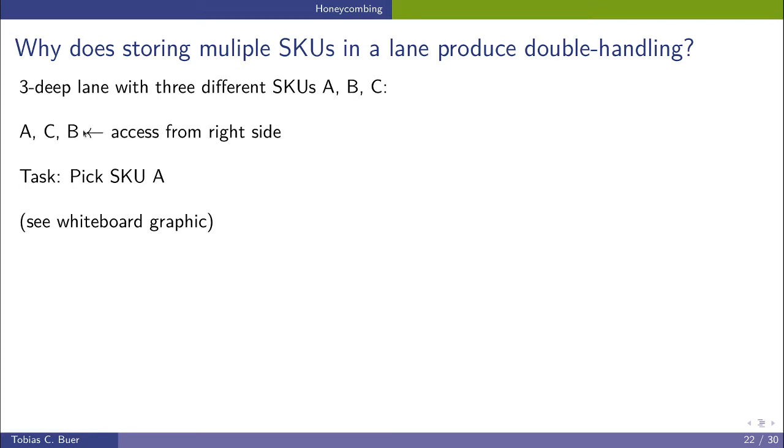So the first pallet that can be accessed is pallet B. And now what would happen if we have to pick SKU A? First of all, we need to pick pallet B as the first operation and move it outside in a different lane.